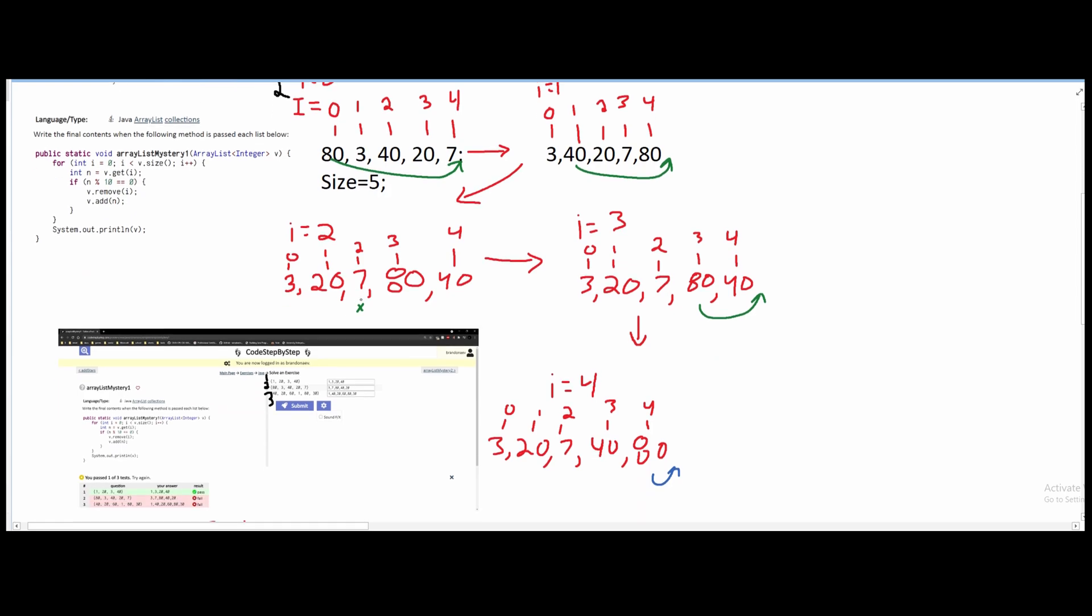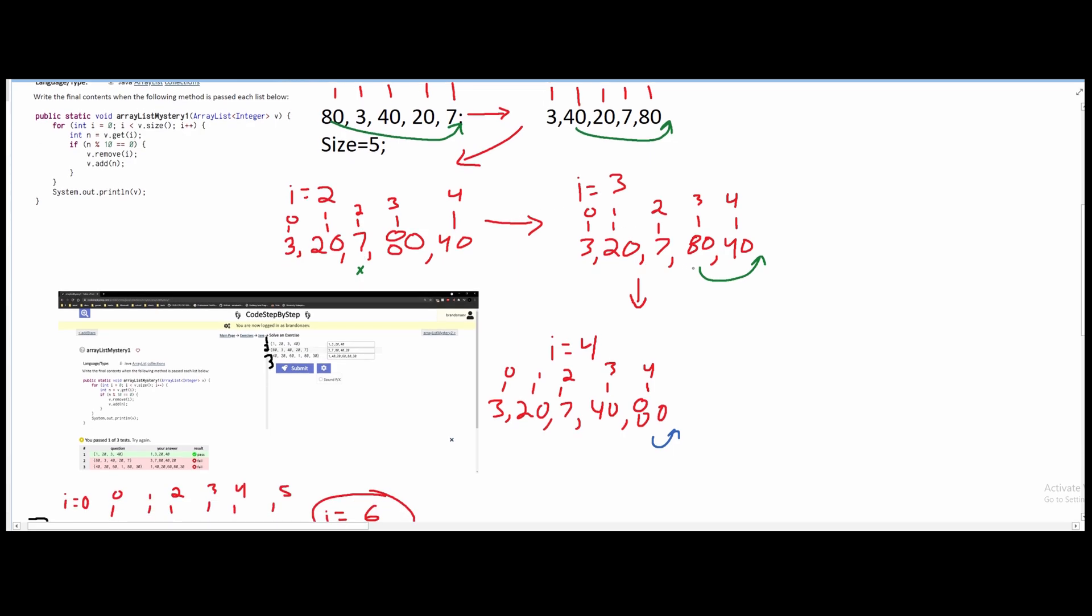Our index 2 is 7. Now since 7 is odd, nothing happens. So we're going to go to index 3. Index 3 is 80. So from here, we're going to move it back behind 40.